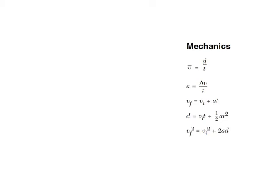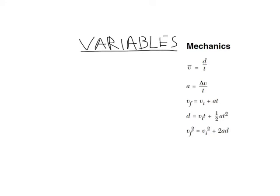Let's write on your reference tables and make a list — a variables column. You could write this next to the word 'mechanics' on your reference tables. We're going to make a list of what variables are in each of these formulas so we can use it as a lookup table. The first formula has D, V, and T.